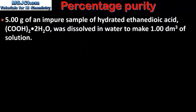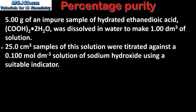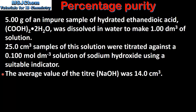Next we look at some more complicated examples. 5 grams of an impure sample of hydrated ethanedioic acid was dissolved in water to make 1 dm³ of solution. 25 cm³ samples of this solution were titrated against a 0.1 mol per dm³ solution of sodium hydroxide using a suitable indicator. The average volume of the titre, which is sodium hydroxide, was 14 cm³. Using this information we will calculate the percentage purity of the hydrated ethanedioic acid.